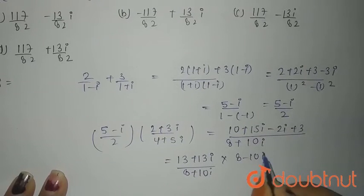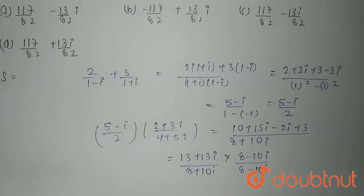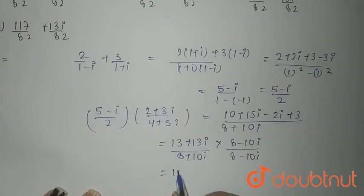Now rationalizing it, you will have 8 minus 10 iota multiplied and 8 minus 10 iota divided because we are rationalizing it. Now multiplying it, you will have 104 minus 130 iota.